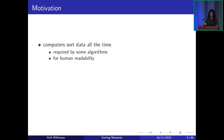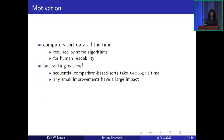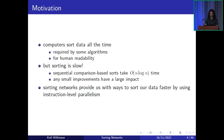We'll start with the motivation. Computers sort data all the time. Some algorithms require us to sort data — for example, Kruskal's minimum spanning tree algorithm, and also the simple binary search. We also sort for human readability, for example sorting items by cheapest on an online store. But sorting is slow. The asymptotic time complexity bound for sequential comparison-based sorts is O(n log n) time for n input items, which brings lots of overhead into our daily computation. Any small improvements we make to the ways we sort will have a large impact. Sorting networks provide us with ways to sort data faster by taking advantage of instruction-level parallelism.